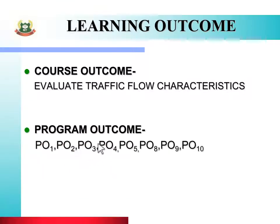Second है program outcome, इसमें आता है PO 1, PO 2, PO 3, PO 4, PO 5, PO 8, PO 9, PO 10 — जैसे की basic knowledge, discipline knowledge, experiments and practice, engineering tools, engineers and society, individual and teamwork, communication and lifelong learning. इन सभी POs का उपयोग करके आप यह topic study करोगे।